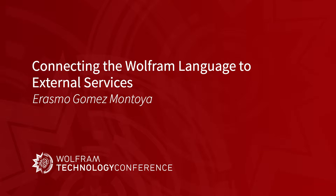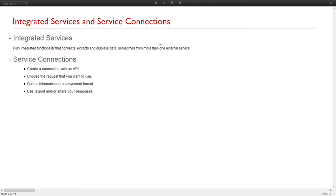The first thing I want to say is that we use two concepts here. The first is inter-ray services. When we talk about inter-ray services, we talk about a function that we can connect to as external services, to gather information and display that information in a particular way. For example, if we want to query the web using different APIs like Google Custom Search or Bing Search, we can use inter-ray services for that.